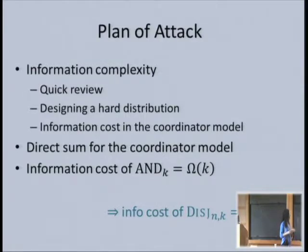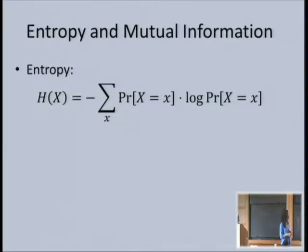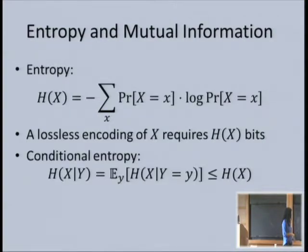Let's dive right in. Please feel free to stop me at any point. Entropy—we all know what it is. It's a measure of uncertainty of a random variable. I'm going to use an operational definition: if you want to losslessly encode a random variable X, you're going to need H(X) many bits to do that.